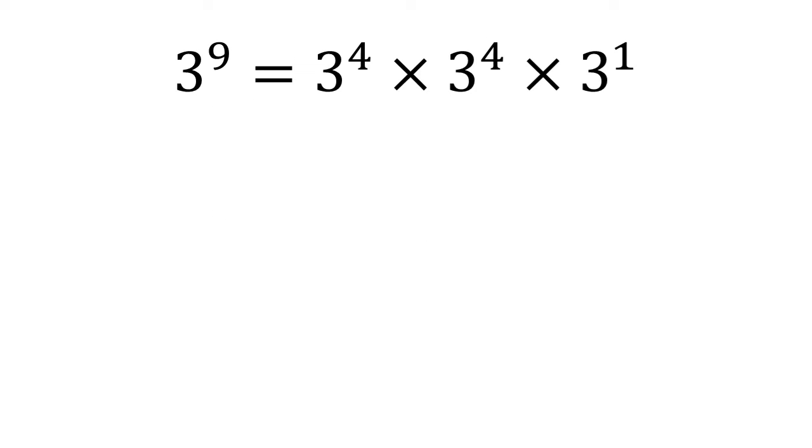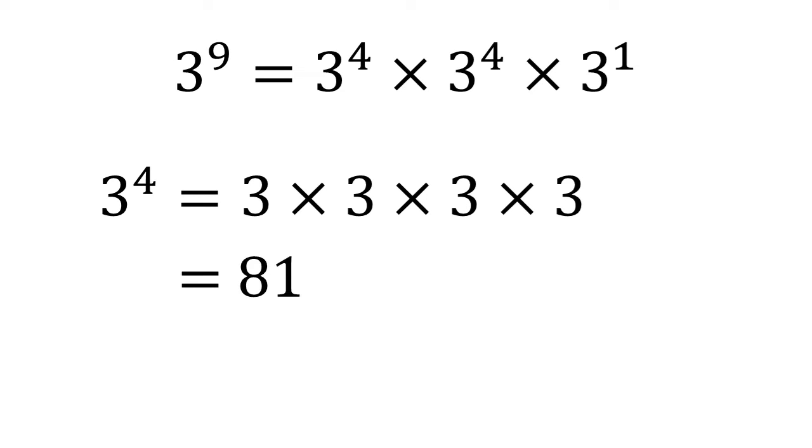Let's start by working out what our 3 to the power of 4 and 3 to the power of 1 are. So 3 to the power of 4 is 3 times 3 times 3 times 3. So 3, 9, 27, 81. 3 to the power of 1 is just equal to 3.